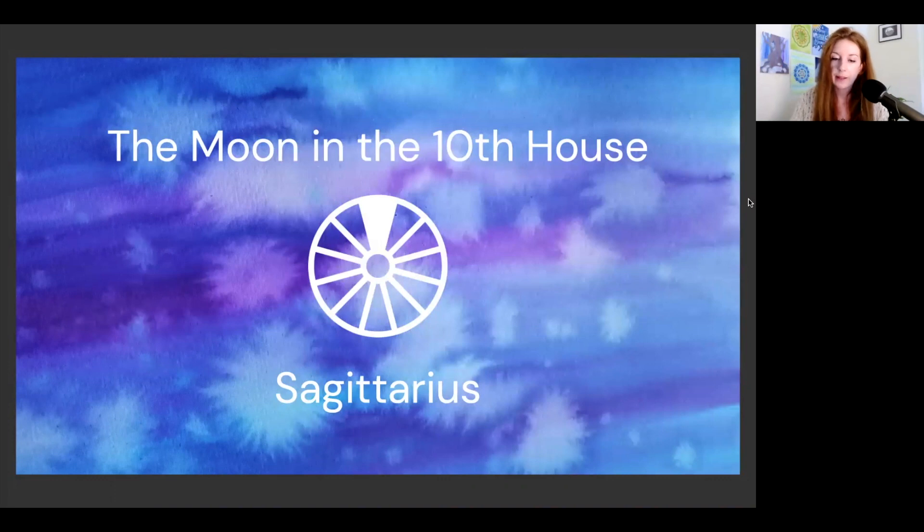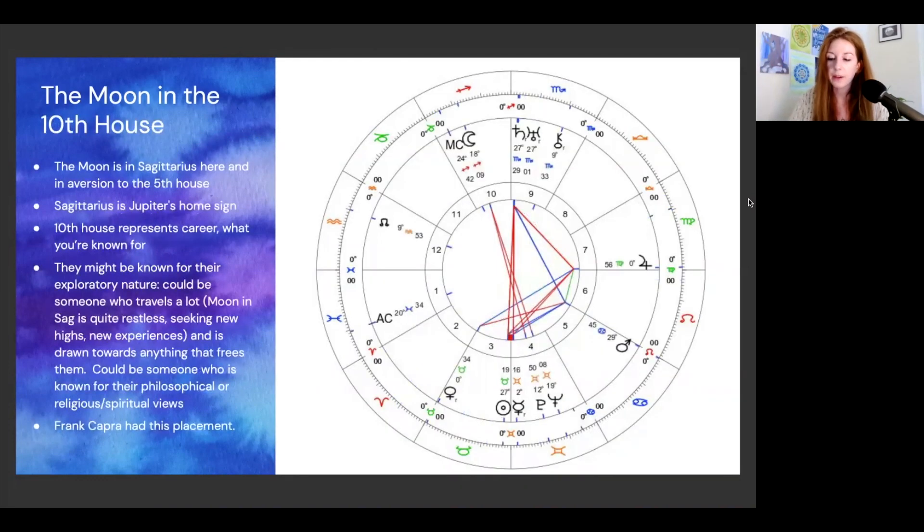Moving on to the moon in the 10th house in Sagittarius. The moon is in Sag here and in aversion to the fifth house, so unable to support the fifth house fully. Sagittarius is Jupiter's home sign, and the 10th house represents career, calling, what you're known for, the action you take in the world. A native with this placement might be known for their exploratory nature. This could be somebody who travels a lot. The moon in Sagittarius is potentially somebody who's quite restless, always seeking new highs and new experiences, and is drawn towards anything that frees them. It could be somebody who is known for their philosophical or religious or spiritual views.